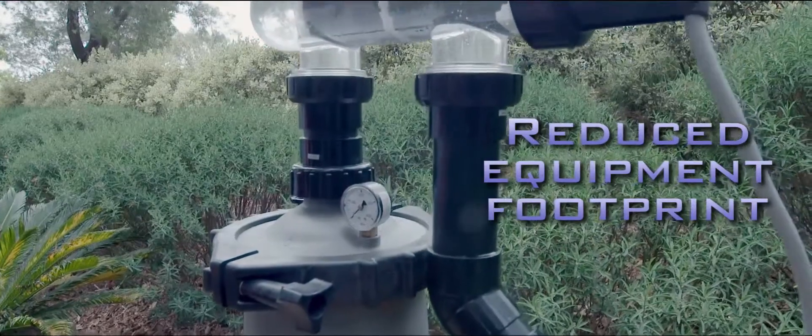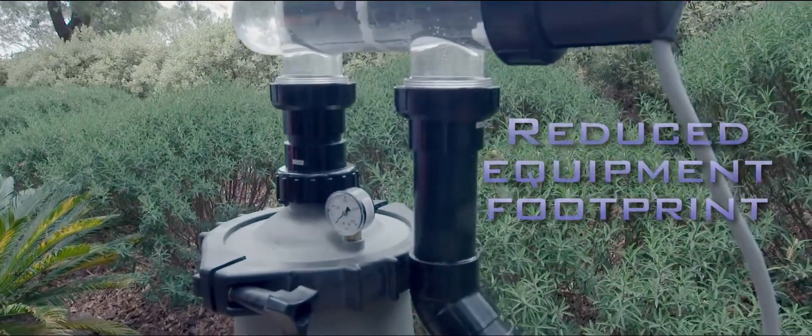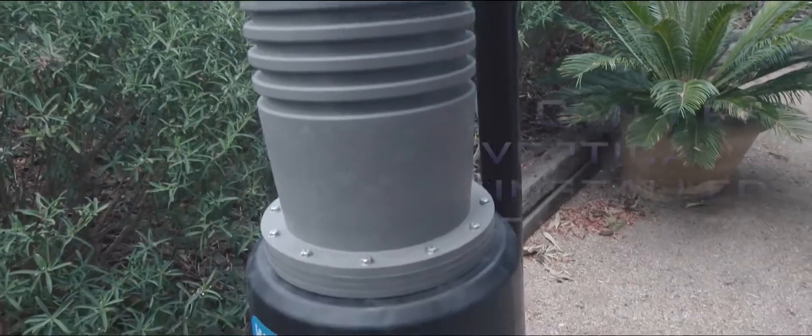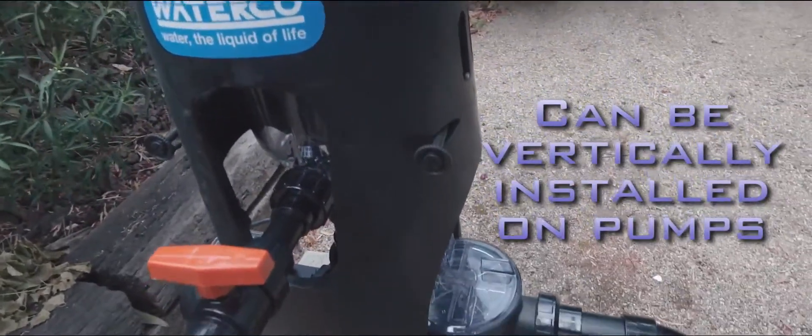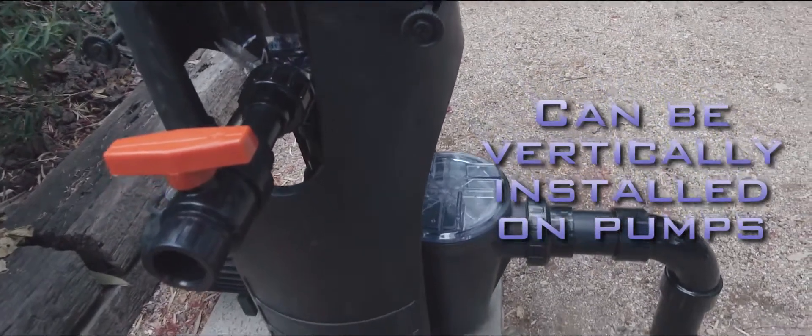The ultra-compact Multicyclone units occupy less space than a domestic sand filter and can be vertically installed on most pool pumps, making it perfect for pools with limited space for filtration equipment.